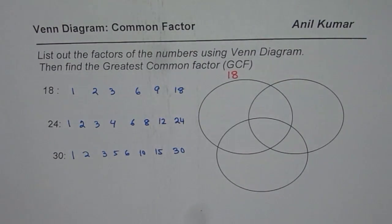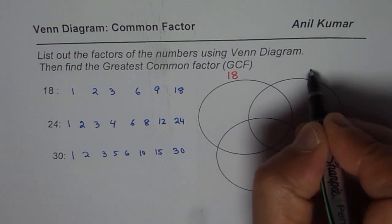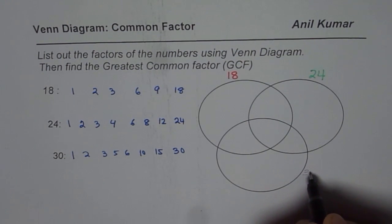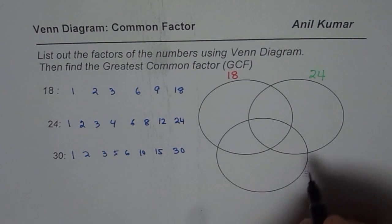We will use different inks this time. And then we will say that this circle on the right has factors of 24. And then we will use another ink for factors of 30. Let me say this is factors of 30.